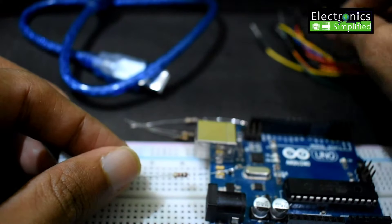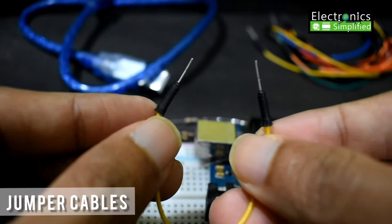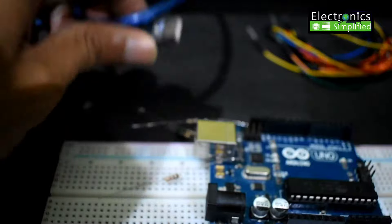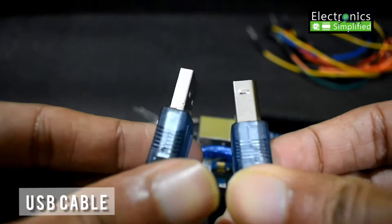We will also need some jumper cables, male to male, so that we can do the connections on our breadboard. And now finally to connect the Arduino to our computer, we will need a USB cable. So these are all the things that we need.